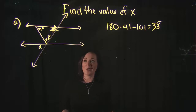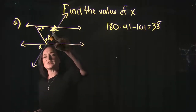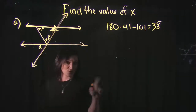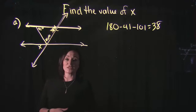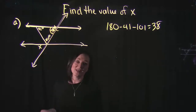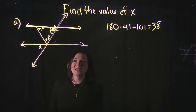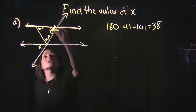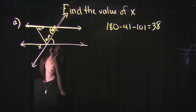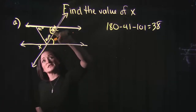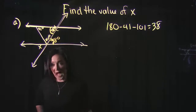Now let's ignore the triangle and focus on that 38-degree angle. We have two parallel lines cut by a transversal, which gives us a few relationships. This 38 degrees is an interior angle, and alternate interior angles are equal to each other. They are on opposite sides of the transversal but equal, so this angle over here is also 38 degrees by the alternate interior angles theorem.